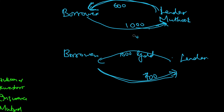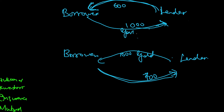Now let's look at this from a finance angle. Instead of gold, let's use a government bond. The borrower collateralizes a government bond worth 1000 and takes a loan of 600. After a few months, he gets back his government bond and pays 700, so the lender gets a 100 benefit.